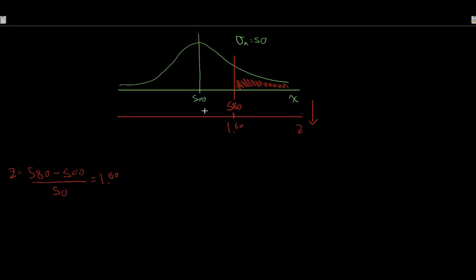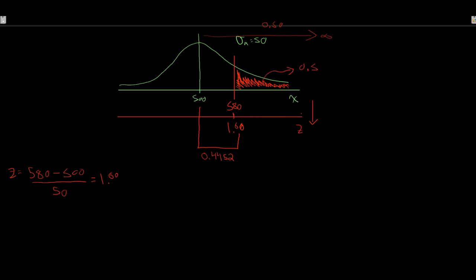Going to our table, we get the probability between our Z value of 1.60 and the mean, which is 0.4452. From the mean all the way out to infinity is 50%, and we want the tail. So 0.5 minus 0.4452 gives us 0.0548 — about a 5.48% chance of witnessing that value or more extreme.